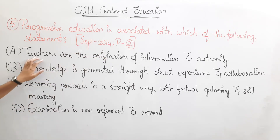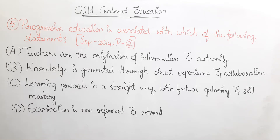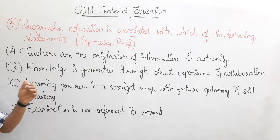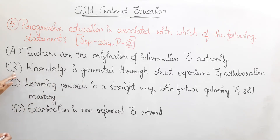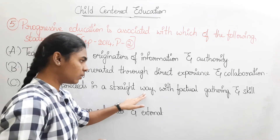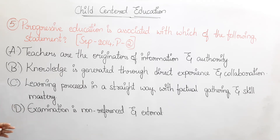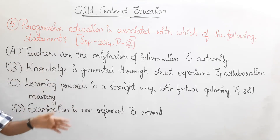Option A: teachers are the originators of information and authority — in a child-centered classroom, the teacher is the most authoritative. Option B: knowledge is generated through direct experience and collaboration — knowledge is developed through group work. Option C: learning proceeds in a straight way with factual gathering and skill mastery. Option D: examination is non-referenced and external — progressive education does not treat examination as an external thing.